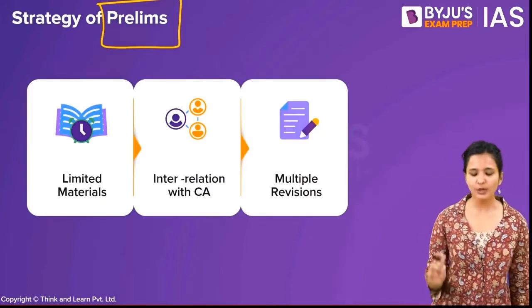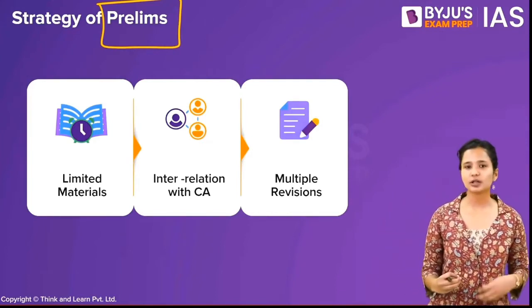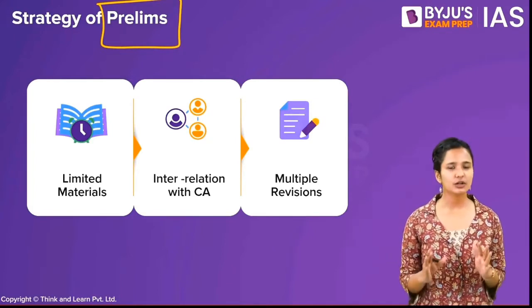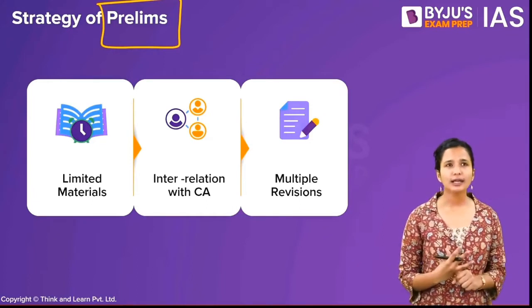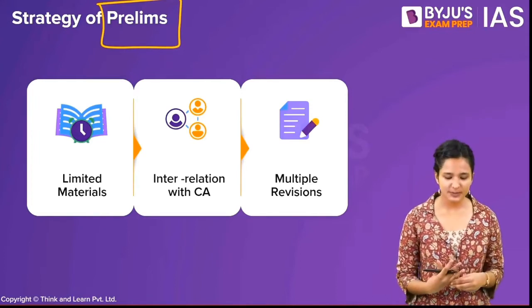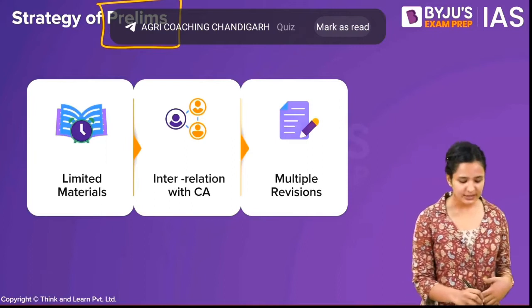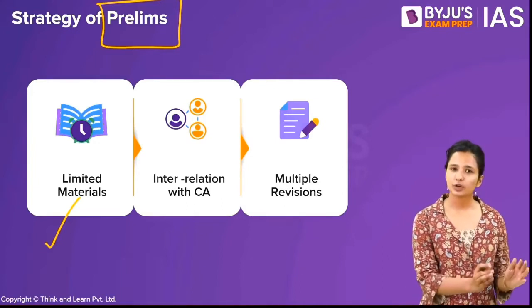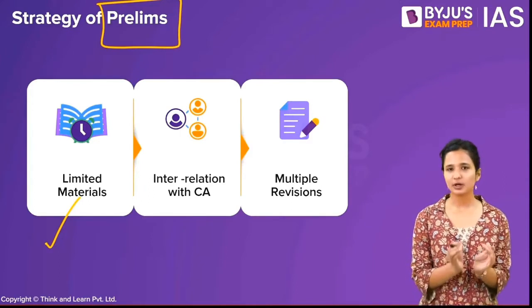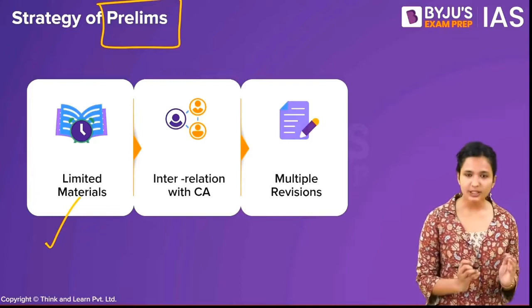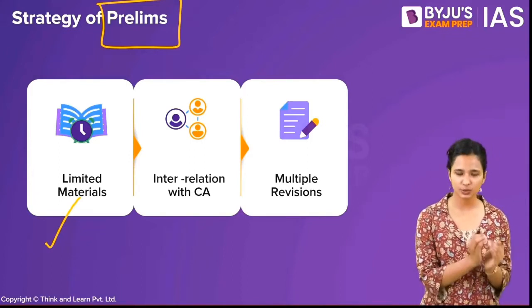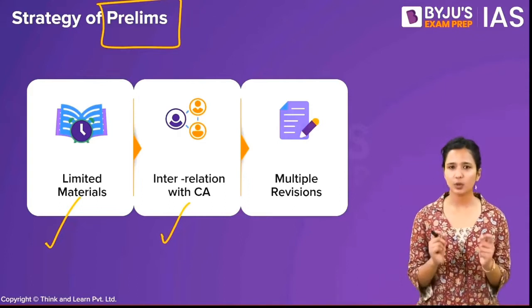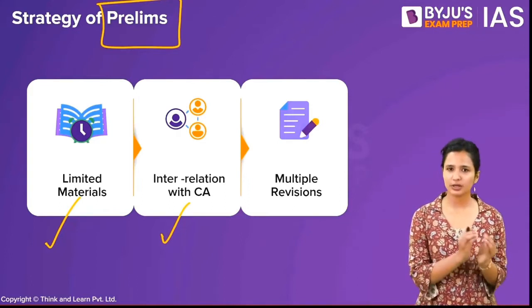For prelims: I personally was not very confident about my prelims. I found it to be the most challenging phase — more than mains and interview. What worked for me was firstly keeping my materials limited. I had one book for economy, one book — Lakshmikanth — for polity. I kept one basic book for most subjects. For current affairs, I also kept my sources very limited — one specific yearly compilation or my own notes. I constantly related whatever I was reading in the static part with my current affairs.